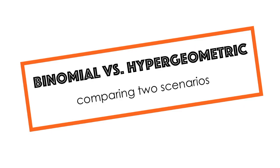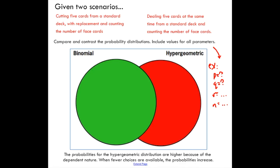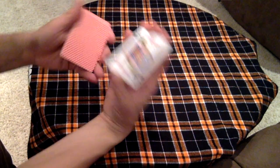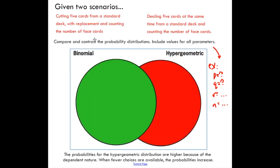Pay very close attention to the wording of each scenario, as that's what dictates whether the scenario is binomial or hypergeometric. So if you're given two scenarios, the first scenario is where you're cutting five cards from a standard deck with replacement and counting the number of face cards.